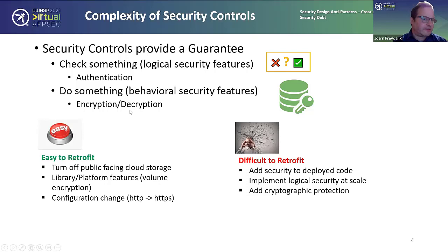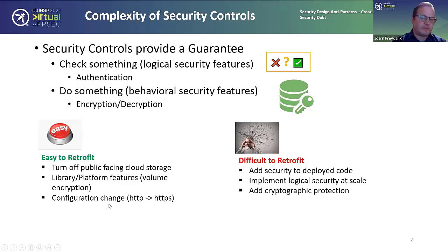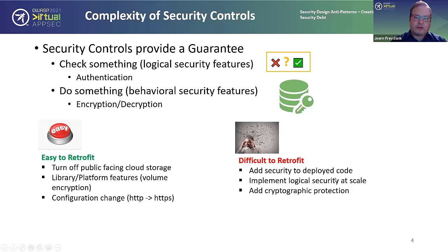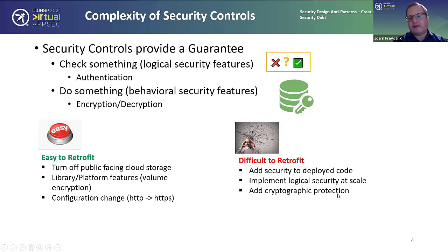For instance, turning off public-facing cloud storage is an easy switch. Using a library feature like volume encryption is relatively easy — just use a key and encrypt the whole thing. A configuration change like data in transit from HTTP to HTTPS is also relatively easy. Now more difficult things to implement: adding security to already-deployed code runs the risk of breaking the code. Implementing logical security at scale across distributed components is also hard, and adding cryptographic protection is harder because you're usually touching more than one system at a time.